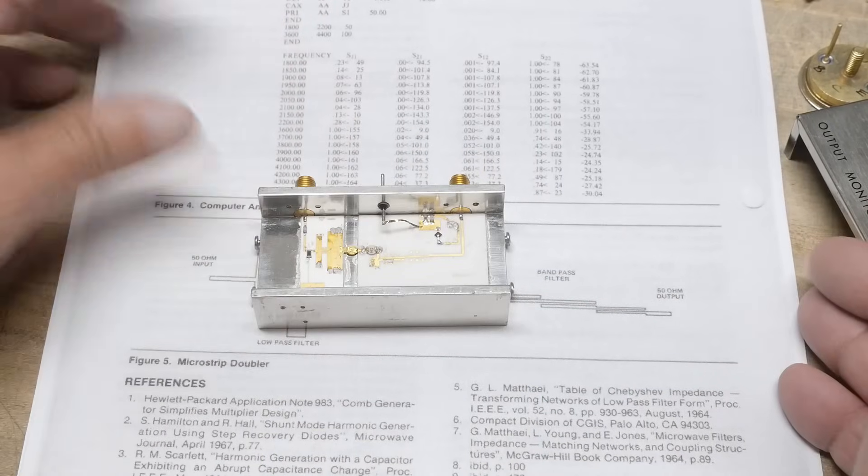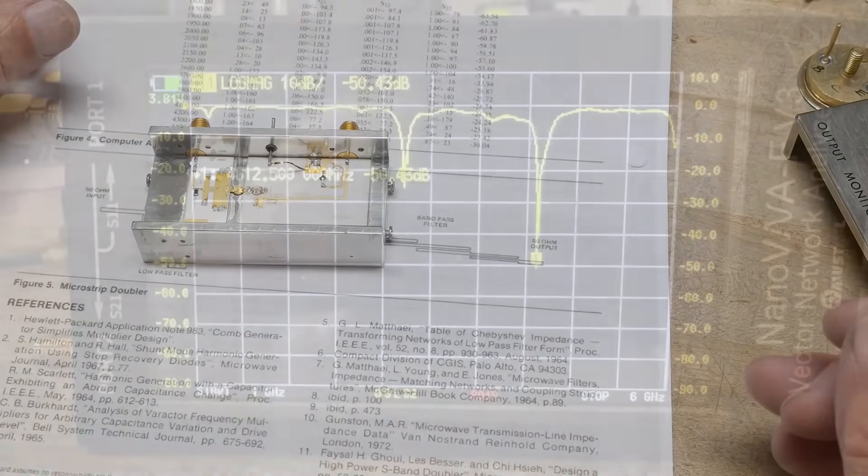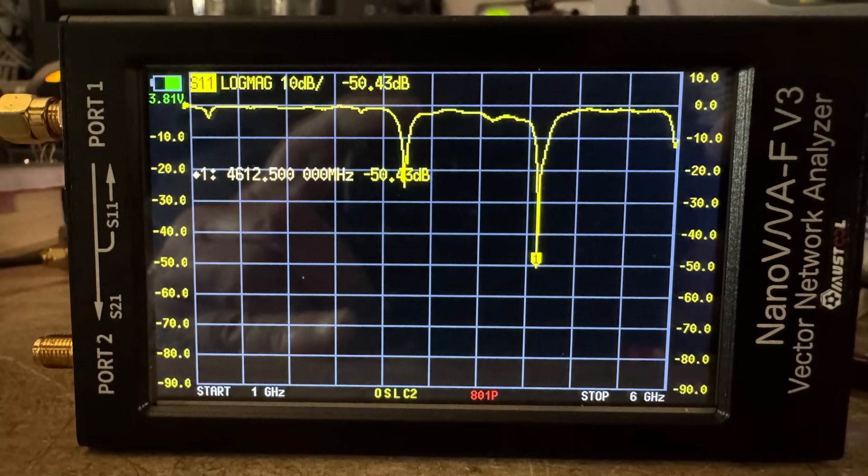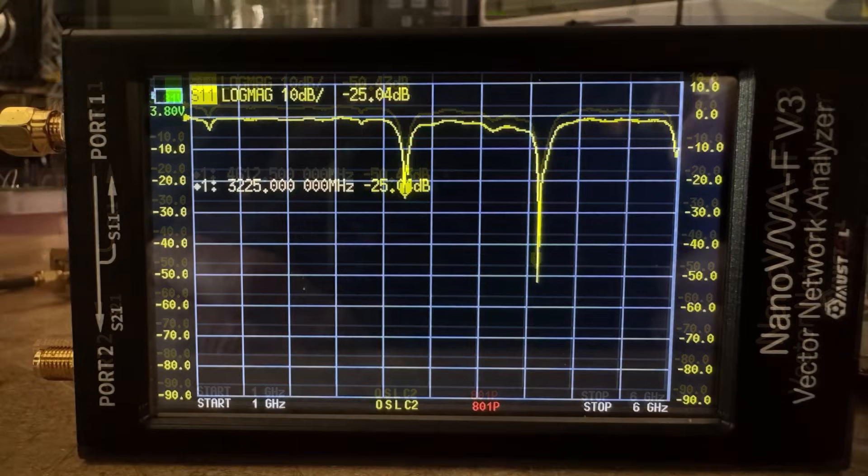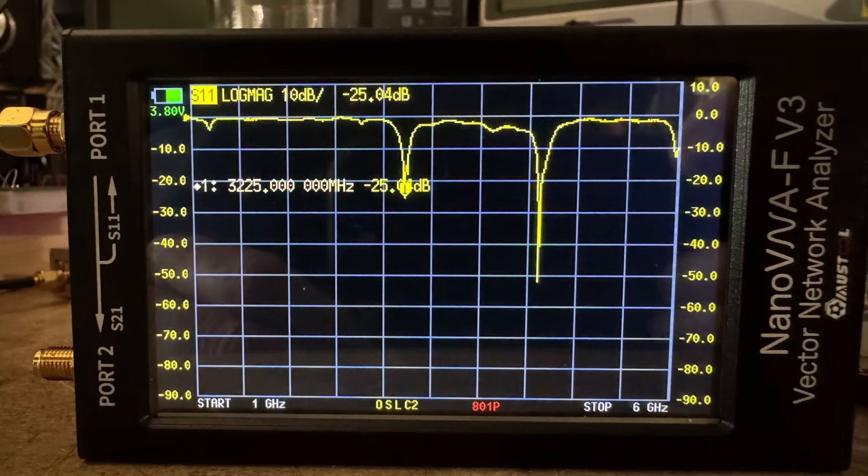And so I did that. I put a VNA on it and I found a couple dips. There's a broadband dip right around 3.225 gigahertz, and then there's another dip up around four something or other.